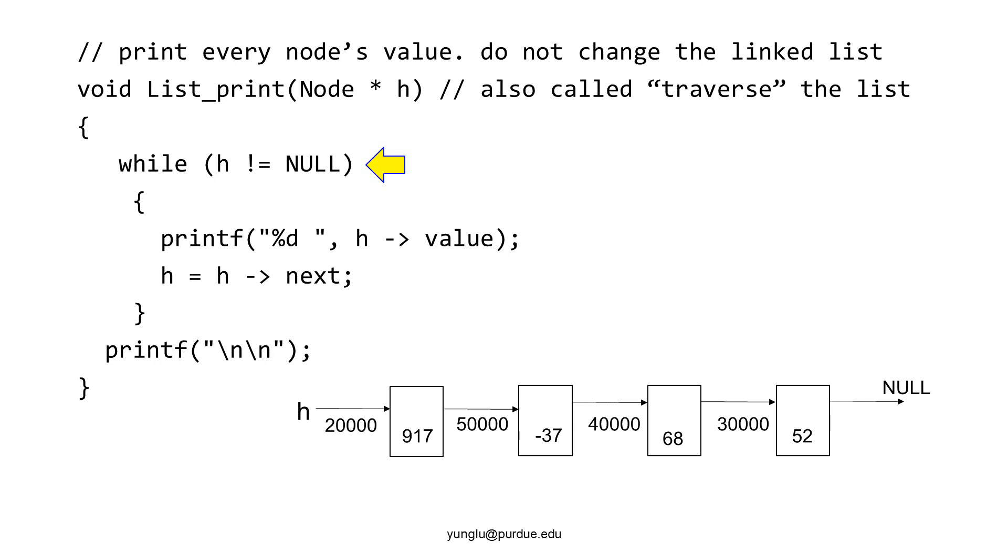This is an example of a print function. The function that visits every node is called traversing the linked list. The function takes only one argument as a pointer to the first node of the linked list.